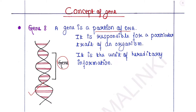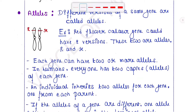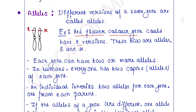Next are alleles. Different versions of a gene are called alleles — they are different forms of the same gene. For example, the red flower color gene could have two versions. The gene is the red flower color gene, and it could have two alleles: capital R and small r. Here we can see a pair of chromosomes — capital R allele is located on one, and small r allele is located on the other.